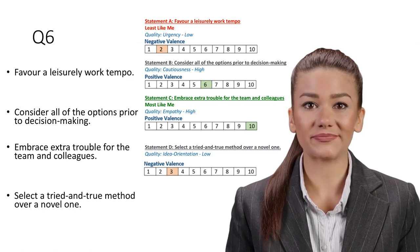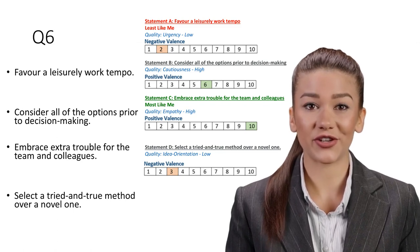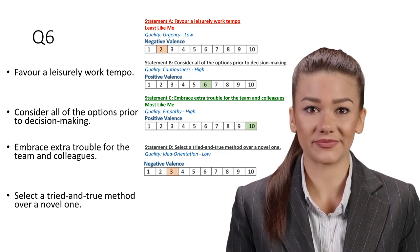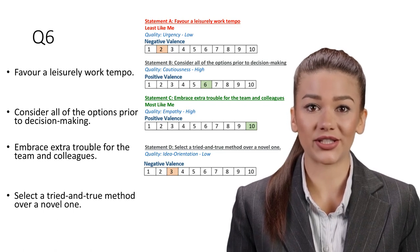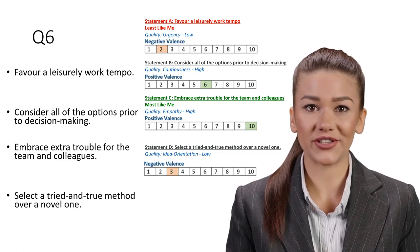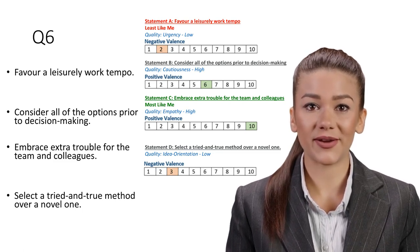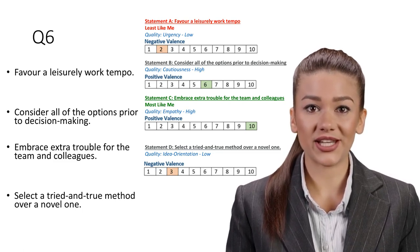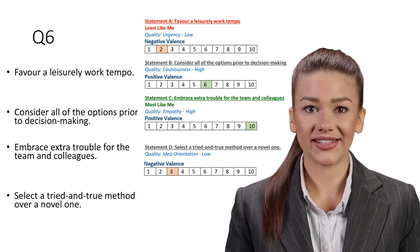Question 6. Statement A: Favor a leisurely work tempo. Least like me. Quality: Urgency, Low. Work environments in the current business world are invariably fast-paced. Preferences for pace should involve a focus on doing whatever it takes to meet deadlines that have been set.